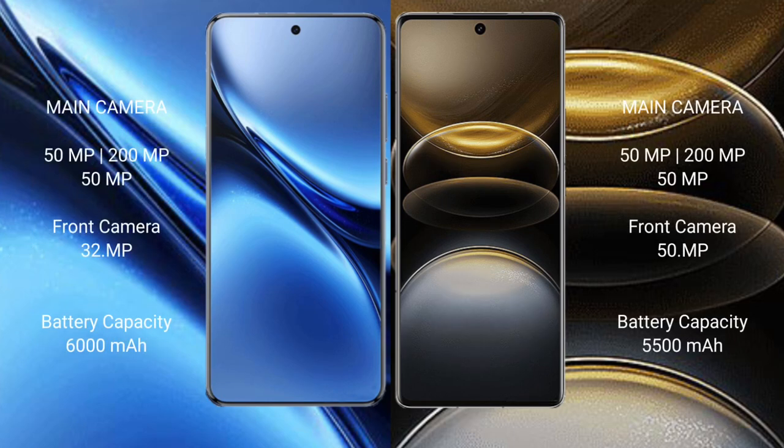The Vivo X200 Pro has a triple rear camera setup of 50MP plus 200MP plus 50MP, and a 32MP front camera. The Vivo X100 Ultra also features a triple rear camera of 50MP plus 200MP plus 50MP, but a 50MP front camera. The Vivo X200 Pro has a 6000mAh battery with 90-watt fast charging support.